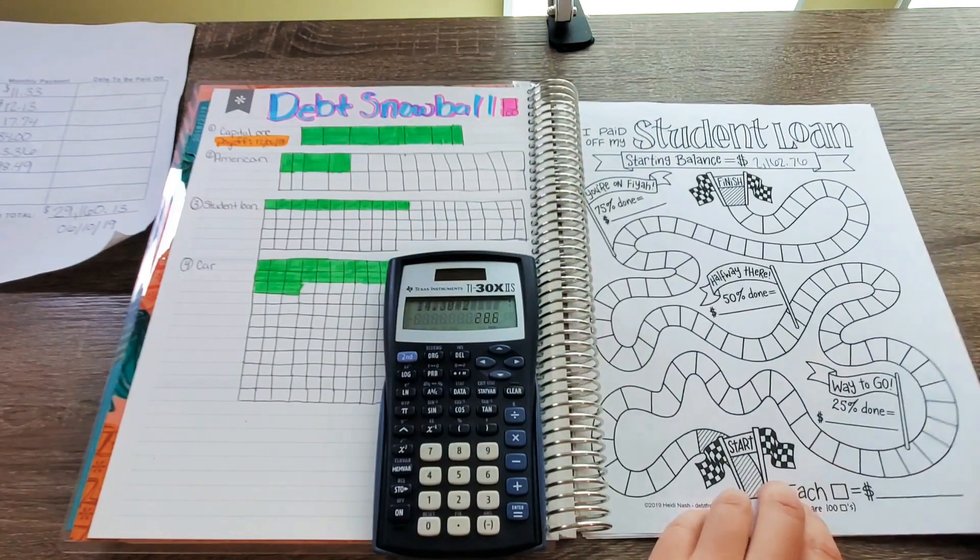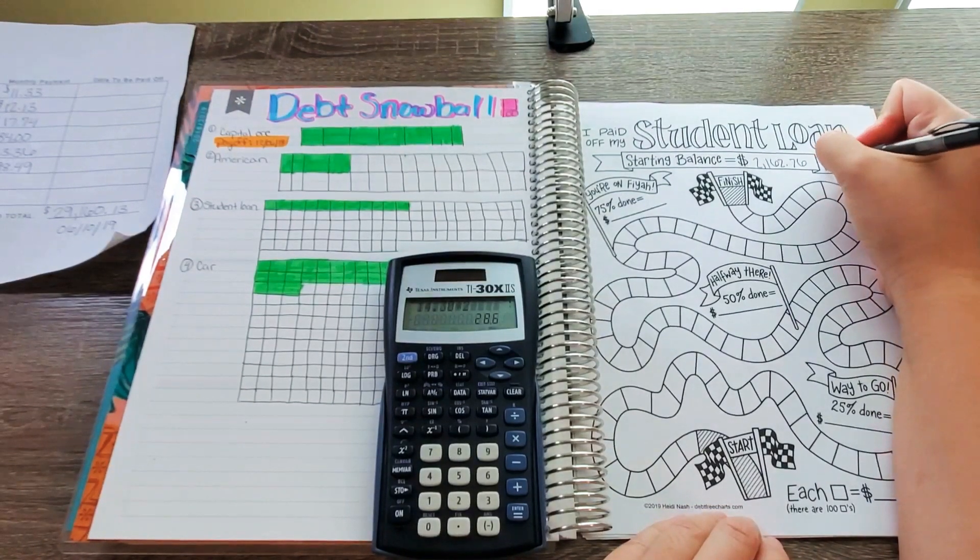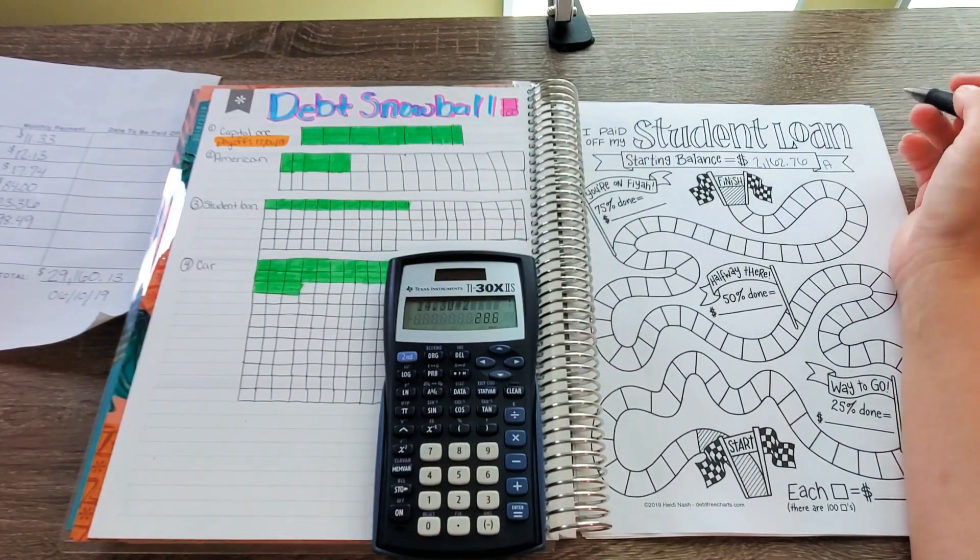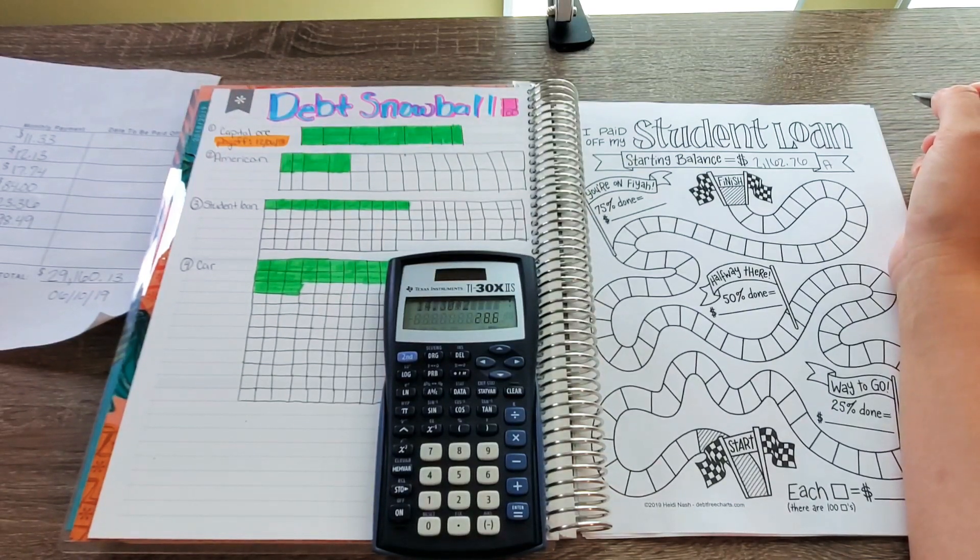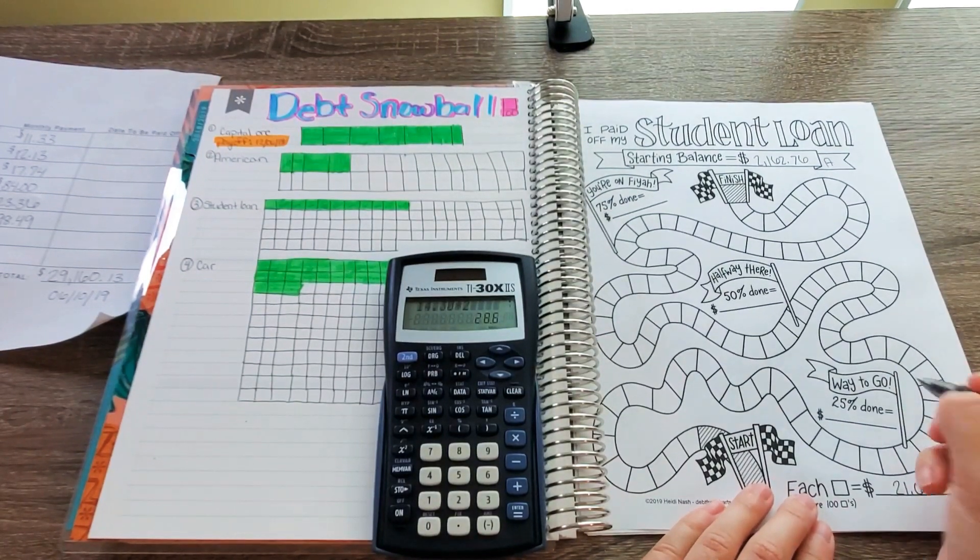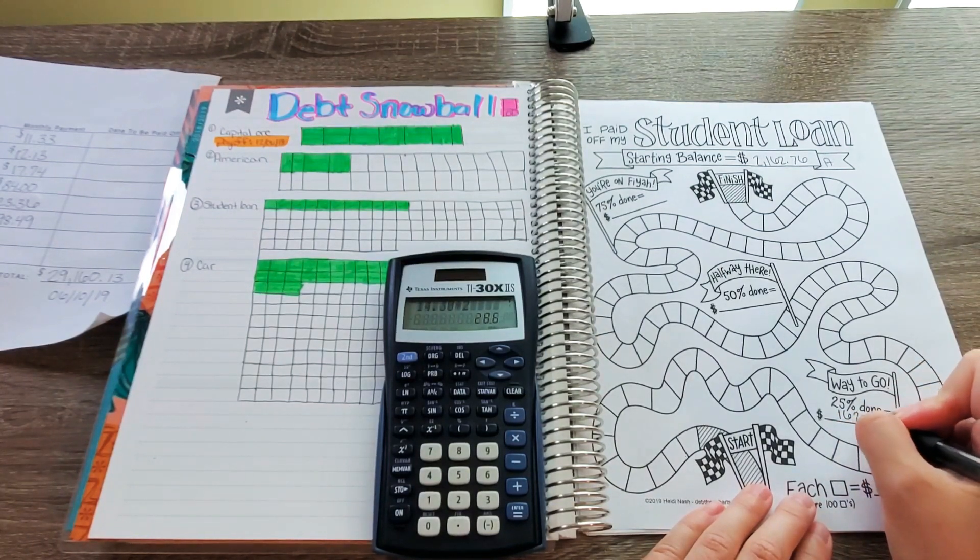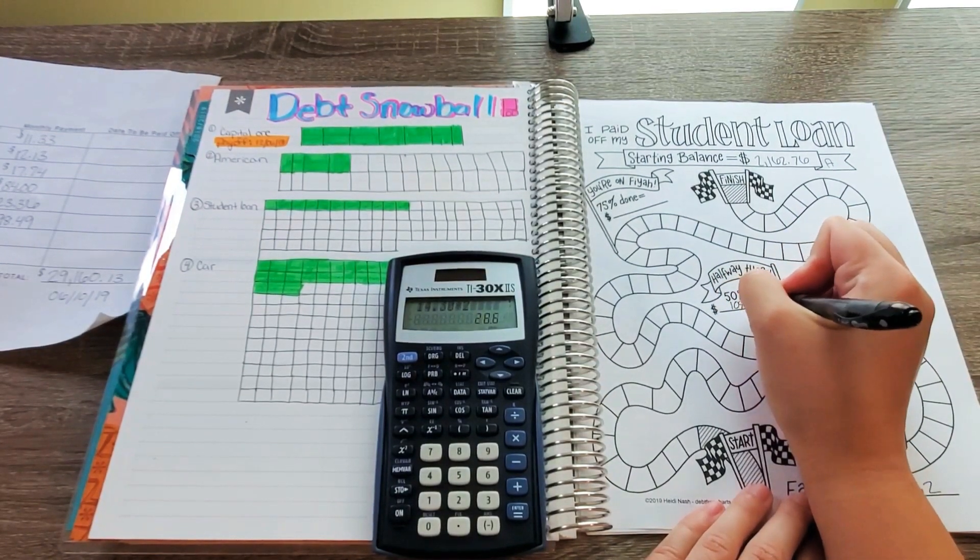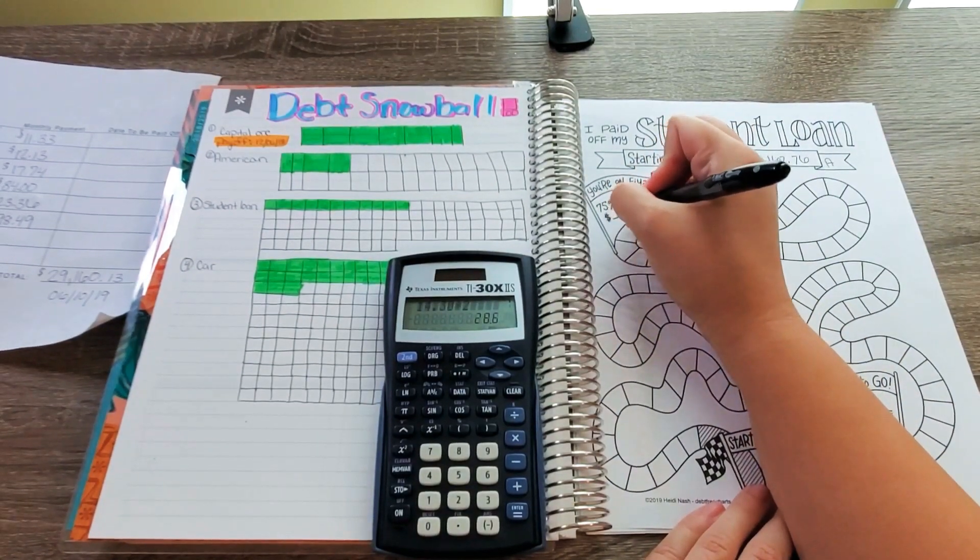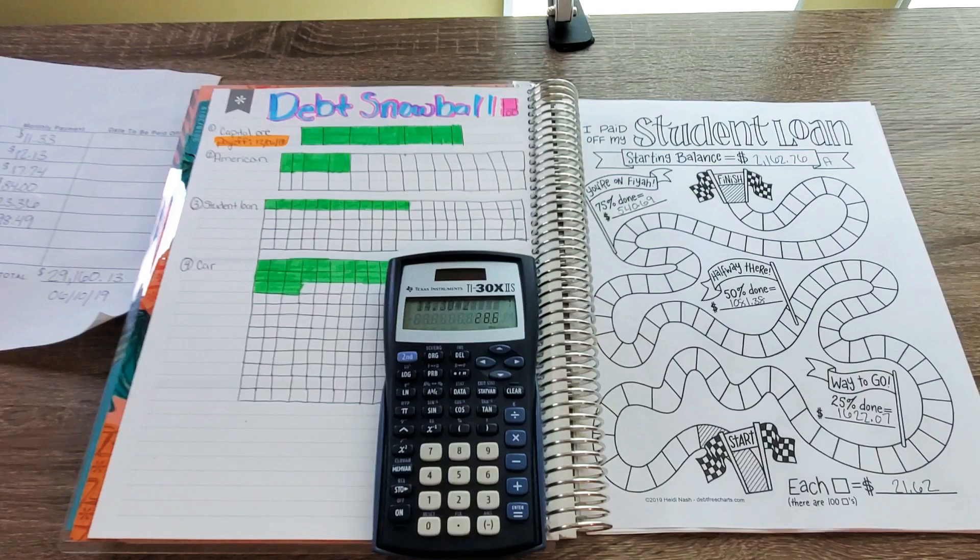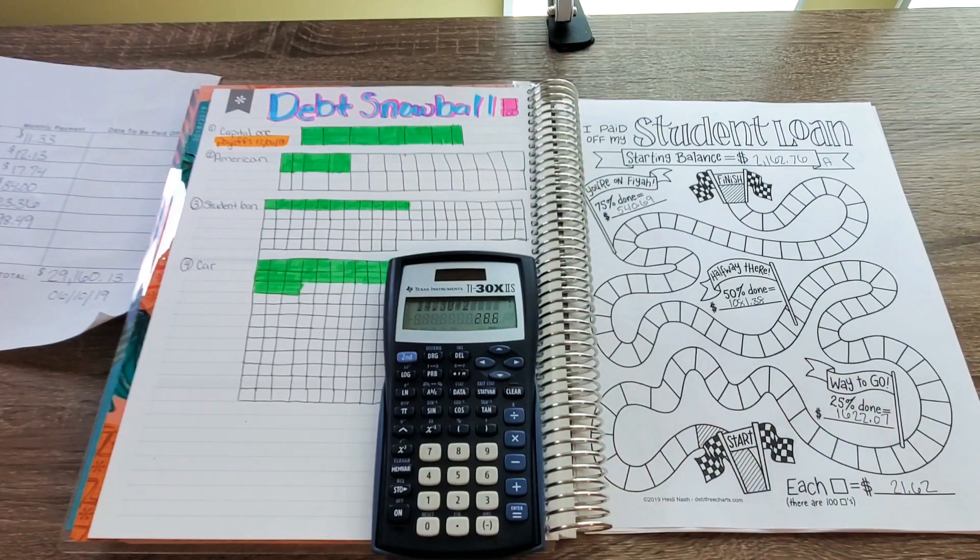Next one is student loan A, and that balance is $2,162.76. So each box will be $21.62. 25% of the way is $1,622.07, 50% of the way is $1,081.38, and then 75% of the way will be $540.69. Alright, I hope y'all are enjoying this. This will be a very, very, very long video, so just bear with me. I'm just trying to organize my debt trackers and everything like that.